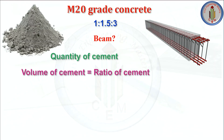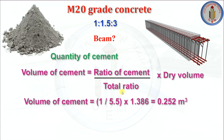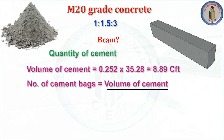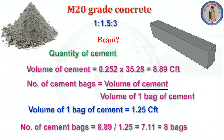Now let us calculate the quantity of cement for the beam. Volume of cement equals ratio of cement divided by total ratio, multiplied by dry volume — 1 divided by 5.5 multiplied by 1.386 — equals 0.252 cubic meter. Converting to cubic feet using the factor 35.28, volume of cement is 8.89 CFT. Number of cement bags equals 8.89 divided by 1.25, giving 7.11 — we consider that as 8 bags.